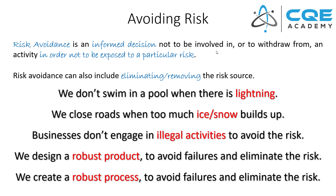The same thing is true for a robust process. This is the value of Six Sigma — if we can create a Six Sigma process, we're going to attempt to eliminate all of the defects associated with that process, and by doing so, we're avoiding both those failures and the risk associated with them. Risk avoidance is a really important strategy to consider.